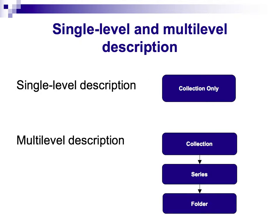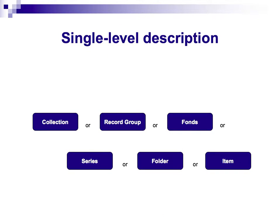Archival material can be described at many different levels. Archival description can consist of only one level of description — that is, single-level — or it may include many different levels of description, that is, multi-level. According to DACS, single-level descriptions can describe archival materials at any level, from large accumulations commonly referred to by archivists as collections, record groups, fonds, or record series, to single items and any level in between. They can, however, only describe materials at one level.